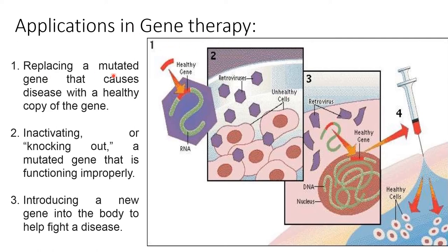The retroviral vector can be used for gene therapy. In gene therapy, replacing a mutated gene that causes disease with a healthy copy of the gene can be done, or inactivation — knocking out a mutated gene that is functioning improperly — can be done, or introducing a new gene into the body to help fight a disease.